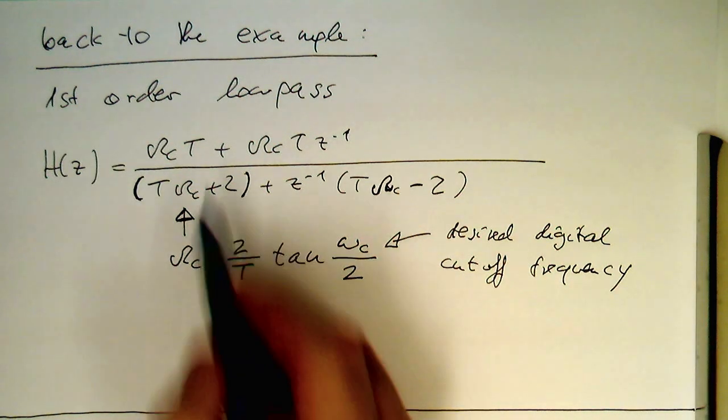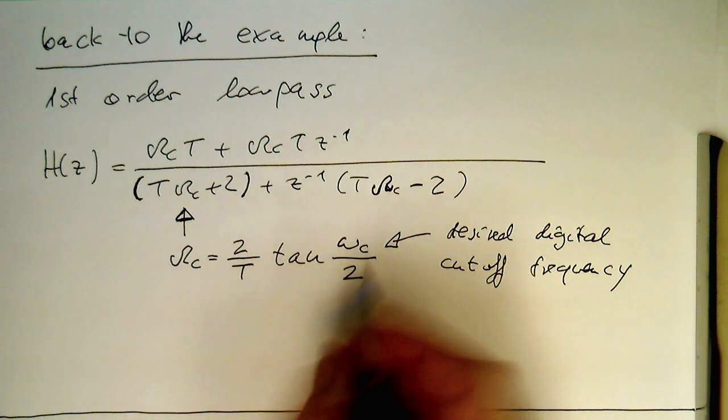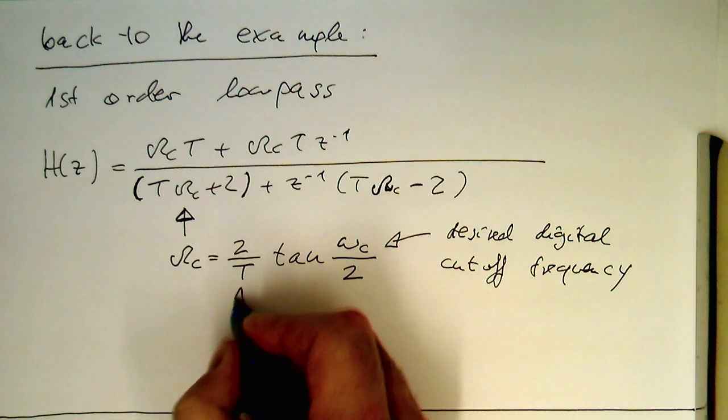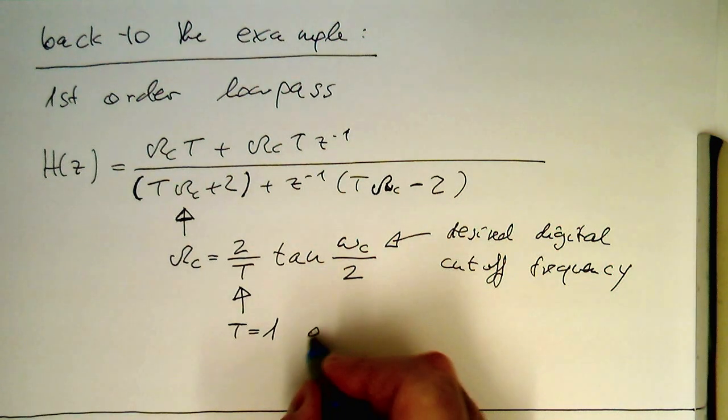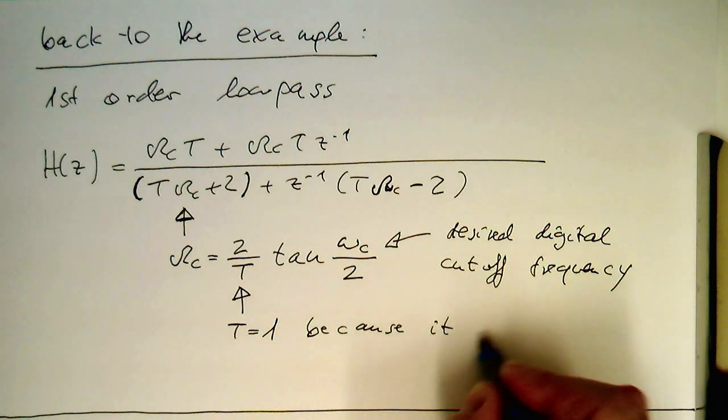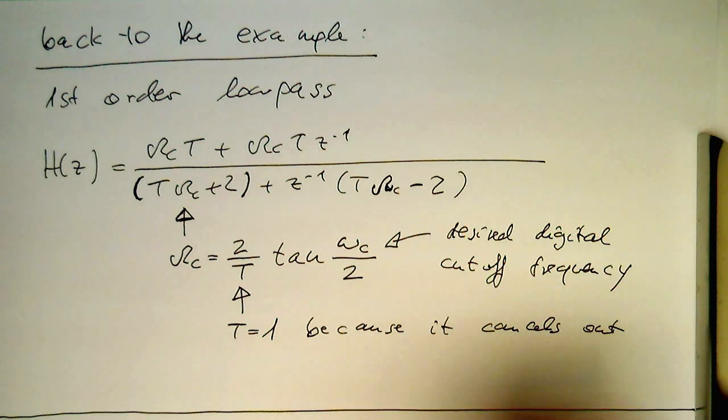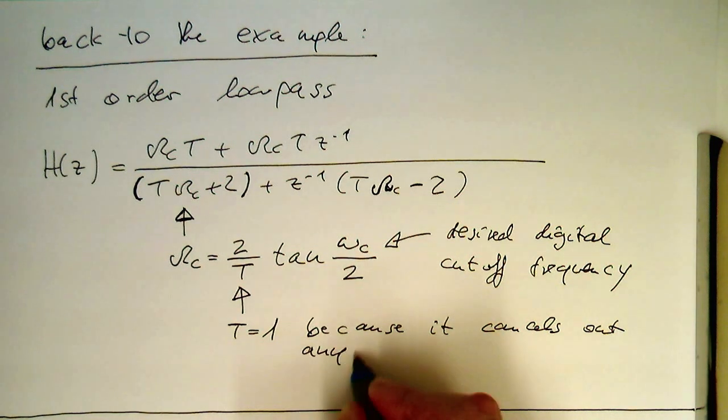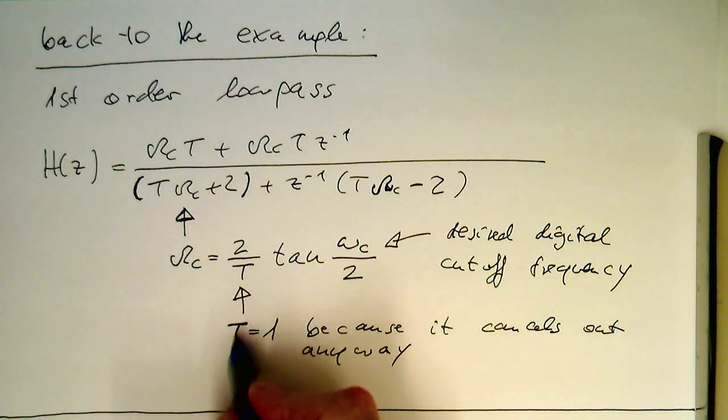And so we see the T cancels out, so we can set T in the final design step just to 1, because it cancels out anyway. It doesn't matter what we set T to; it's gone anyway.